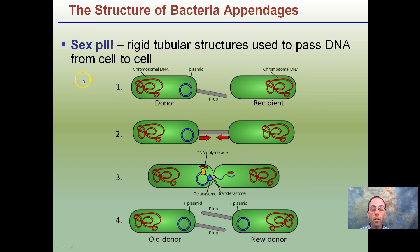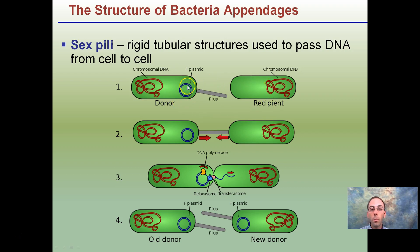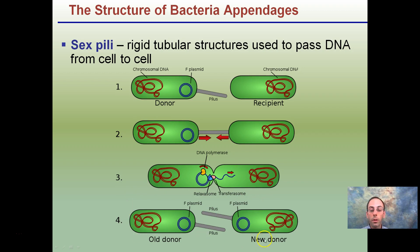Sex pili are another type of structure on prokaryotes, particularly bacteria. They allow DNA to pass from cell to cell. For example, if a plasmid conferring antibiotic resistance is advantageous, the pilus joins two bacteria, the plasmid is replicated and passed through the pili, and the other bacterium now has resistance to that antibiotic. The bacteria can then proliferate and take over — this is how antibiotic-resistant bacteria form.